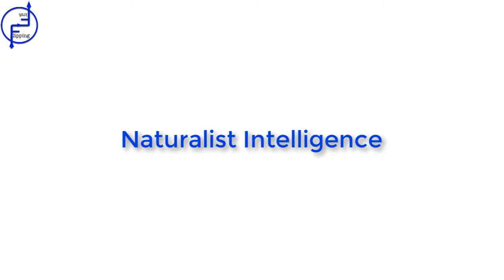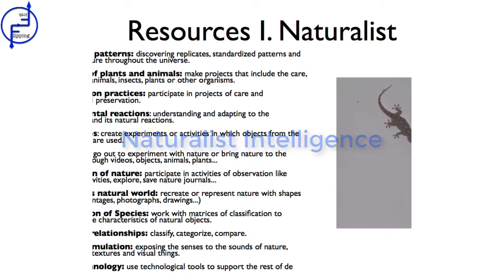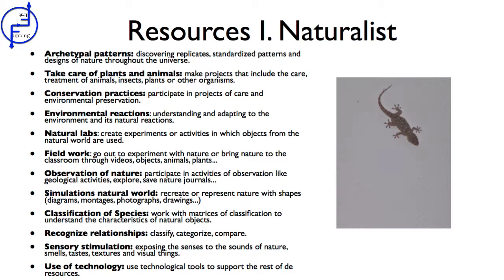The use of naturalist intelligence in the classroom. Naturalist intelligence was one of the last ones that Gardner incorporated into his theory, but it's no less important. To promote this intelligence, we can use resources that involve classifying objects, categorising, comparing, everything related to the environment, explaining natural phenomena, observation of nature, doing outdoor activities, working on recognising relationships, and using technological resources to support the rest.